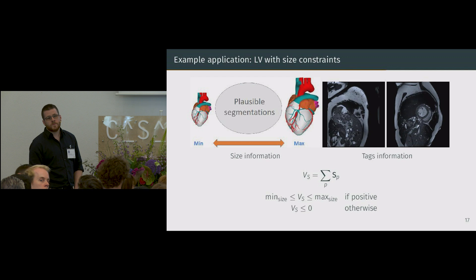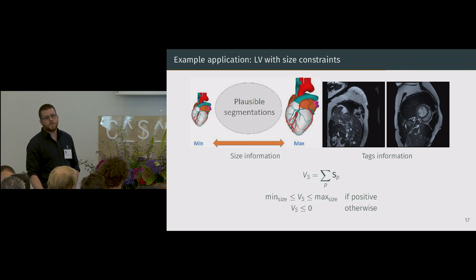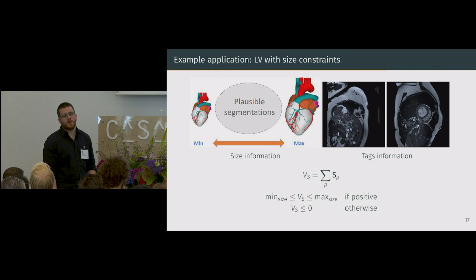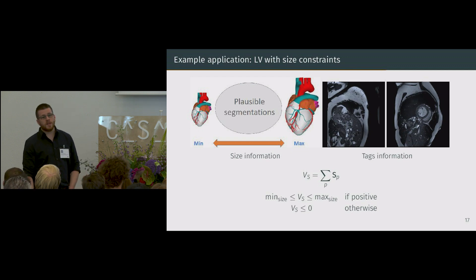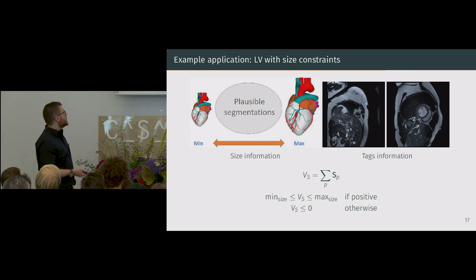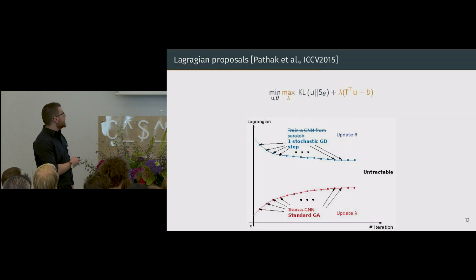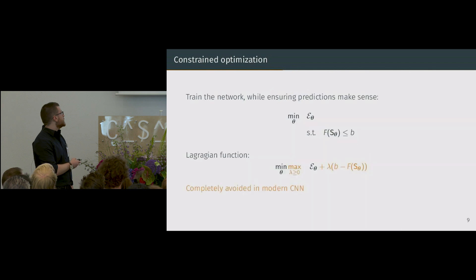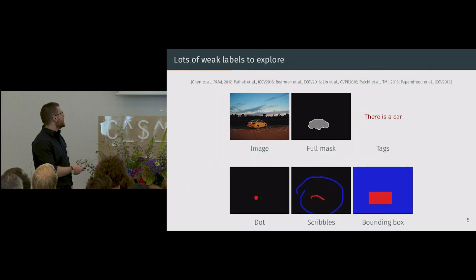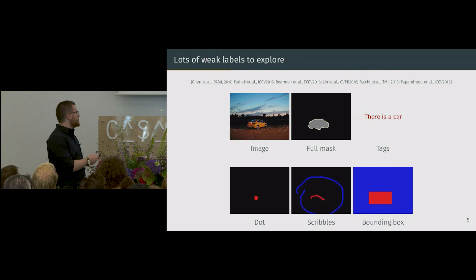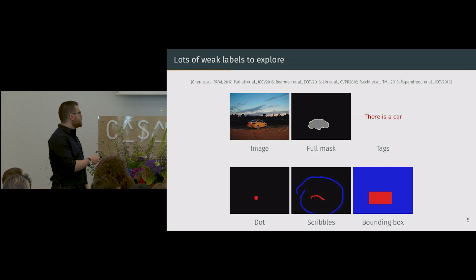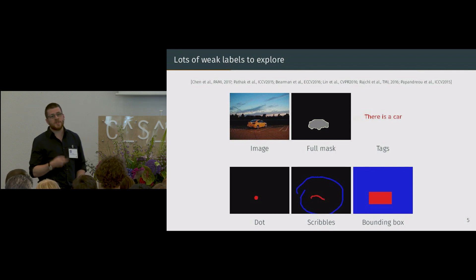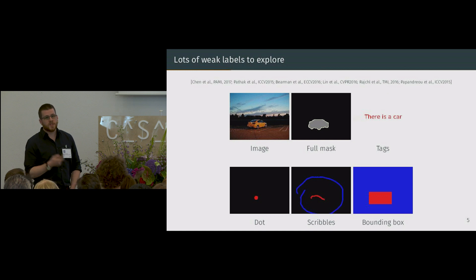A question about other types of weak supervision, like bounding boxes: annotating a center point might not be much faster than a bounding box. We did not have time to experiment with bounding boxes yet, but we really want to — they provide negative information about the problem. One plan is to enforce that nothing is predicted outside the bounding box, and within the bounding box impose a size constraint, which could give better results.